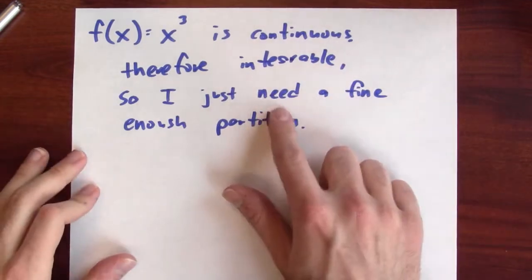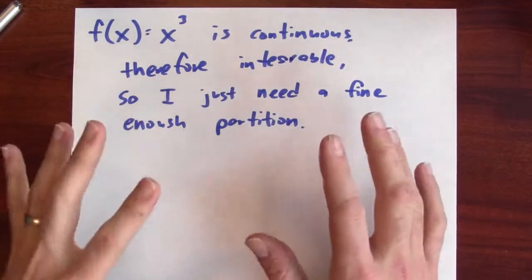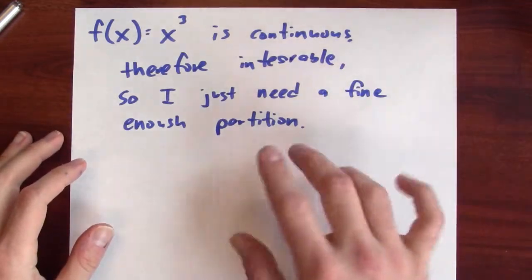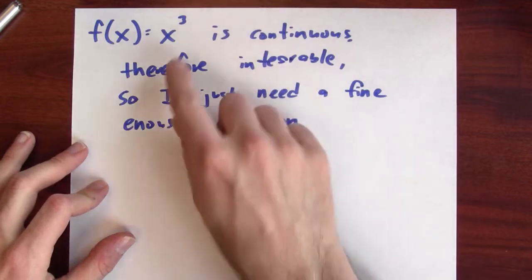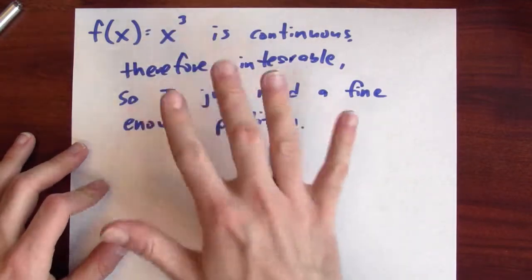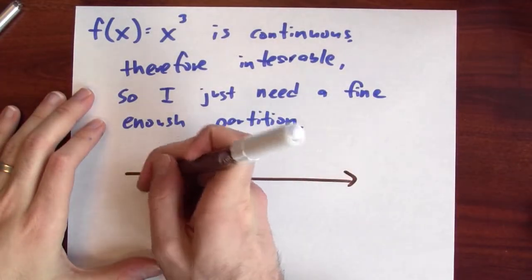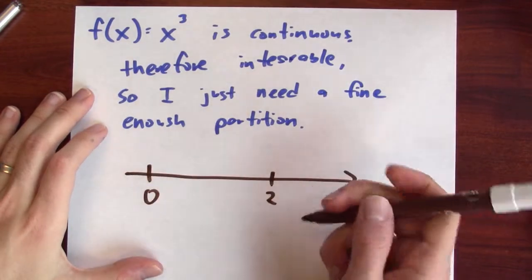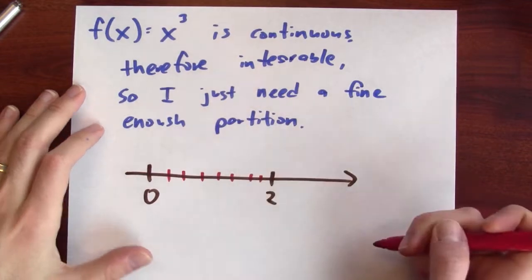So all I need is just to start with a fine enough partition, and it won't matter how I pick those sample points inside the partition. My Riemann sum will be close to the true value of the integral. So I'll cut the interval from 0 to 2 into n pieces. Pictorially, I want to start with the interval between 0 and 2, and I want to cut it up into n pieces.